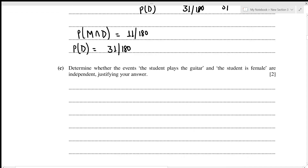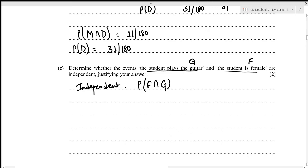For the third part, we determine whether the events 'student plays guitar' and 'student is female' are independent. The condition for independence is that P(female ∩ guitar) equals P(female) × P(guitar). If the left-hand side does not equal the right-hand side, the events are not independent.